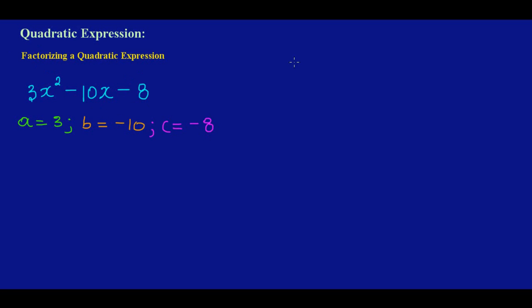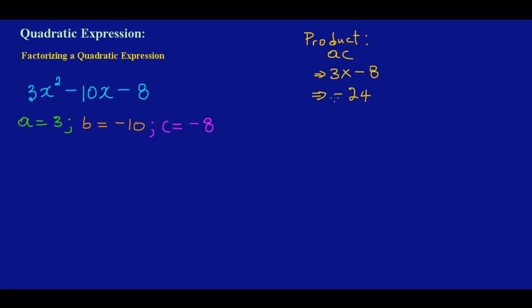When factorizing a quadratic expression, the first thing we have to find is the product of A and C — remember, product means to multiply. A is 3 and C is negative 8, so we have 3 times negative 8. A positive times a negative gives a negative, and 3 times 8 is 24, so the product of AC is negative 24.